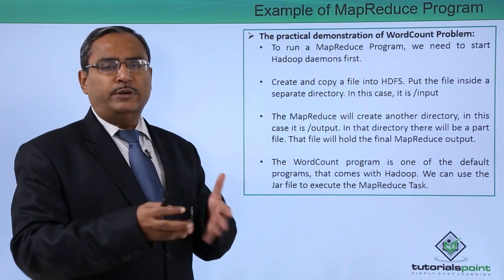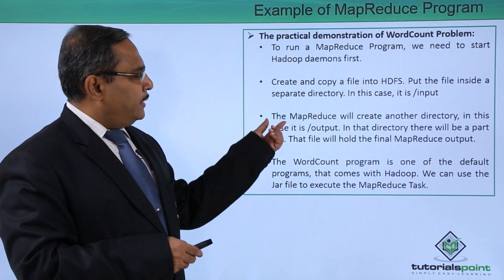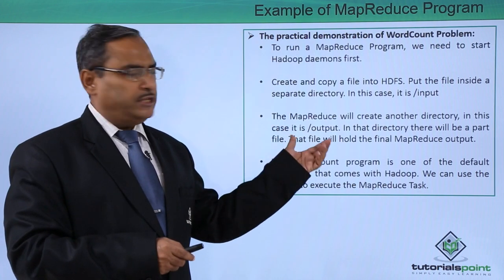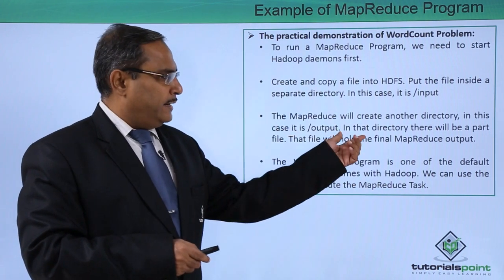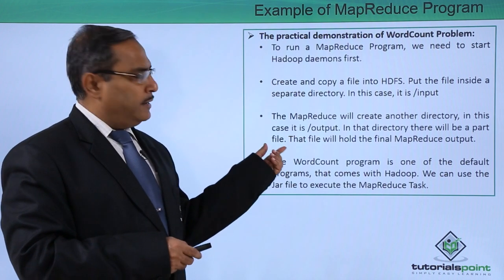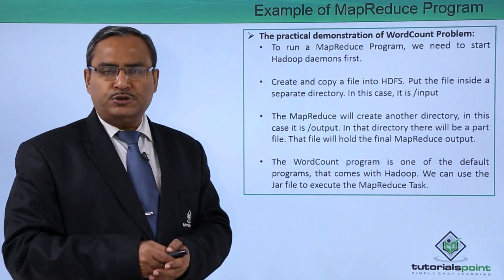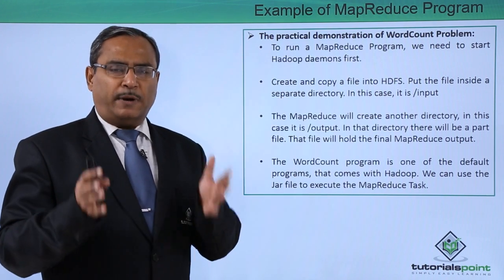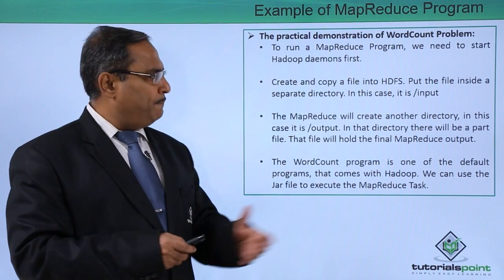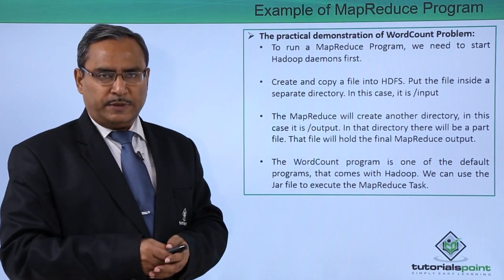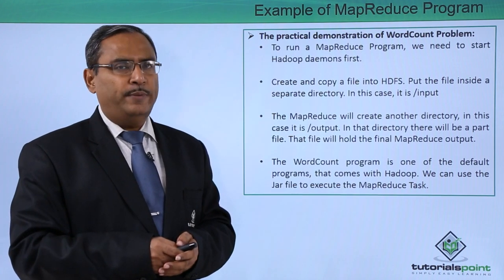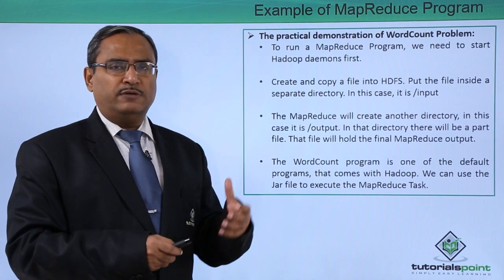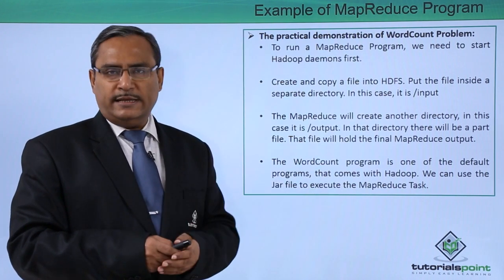Here we are having one file on which this MapReduce program will be working. The MapReduce will create another directory — in this case, it will be slash output. In that directory, there will be a part file, and the file will hold the final MapReduce program output. In the input folder, we will have our respective file on which the MapReduce program will be working. For that purpose, you are supposed to use the put command to put the file from the Unix system to the HDFS.